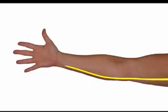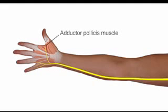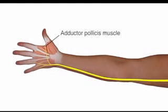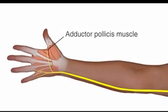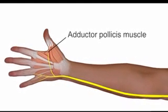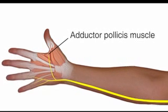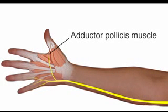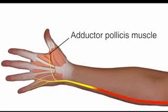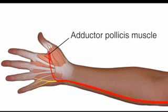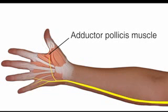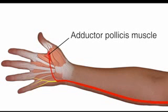When possible, monitor the adductor pollicis muscle. It is the only hand muscle of the thenar eminence that is innervated solely by the ulnar nerve. Monitoring this muscle helps to ensure that the muscle contraction is generated by a nerve impulse rather than by direct muscle stimulation.